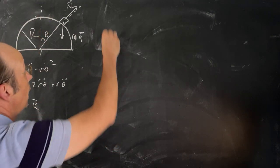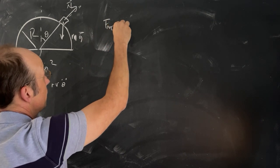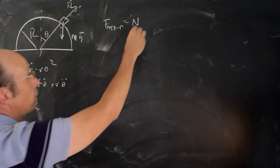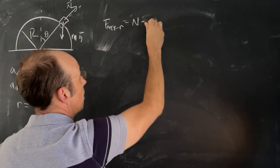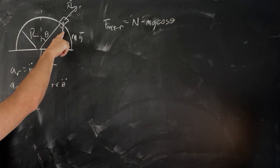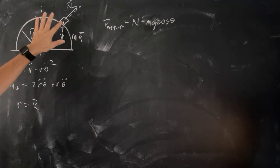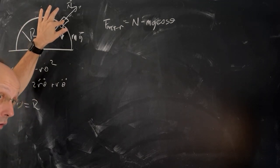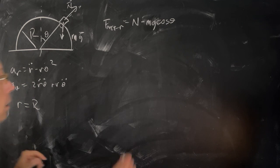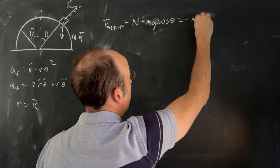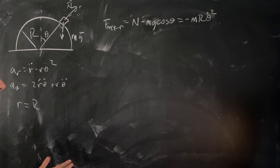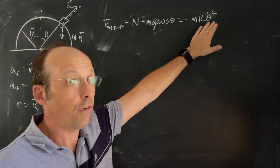Let's write down Newton's second law in the R direction. What is R double dot? If it's confined to the surface, R equals the radius of the sphere, so R dot and R double dot are both zero. So in the R direction, F_net_R is going to be the normal force, plus a component of the gravitational force: minus mg cosine theta. This equals negative M R theta dot squared — that's Newton's second law in polar coordinates. You could also say this is M V squared over R, it's the same thing.